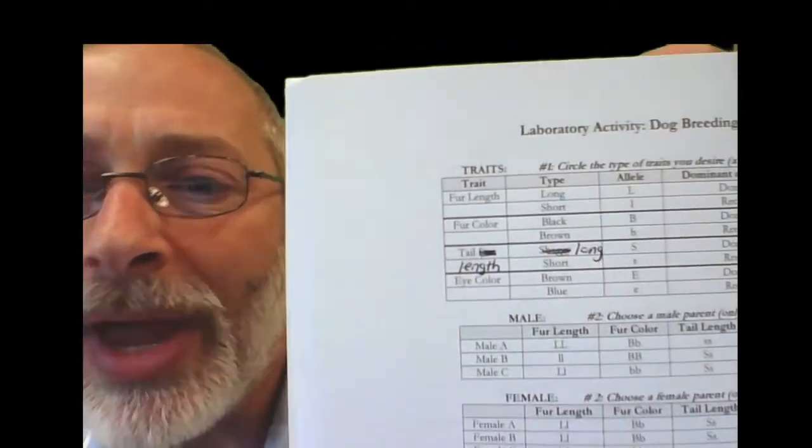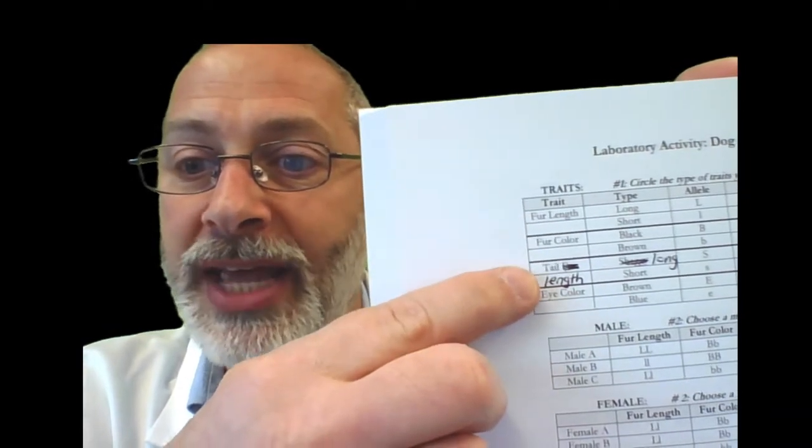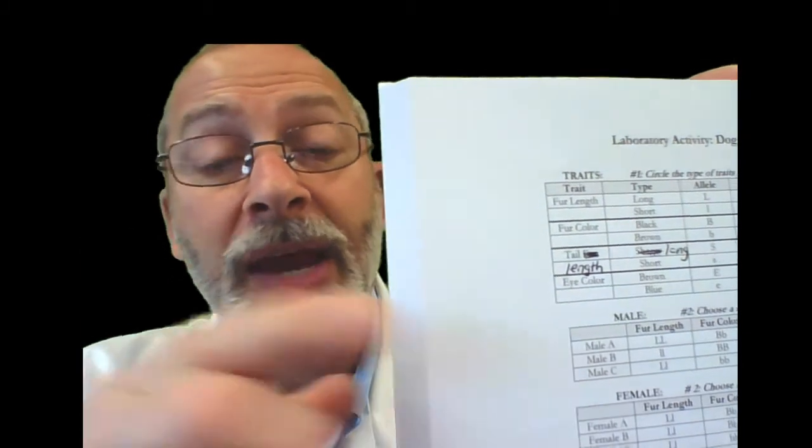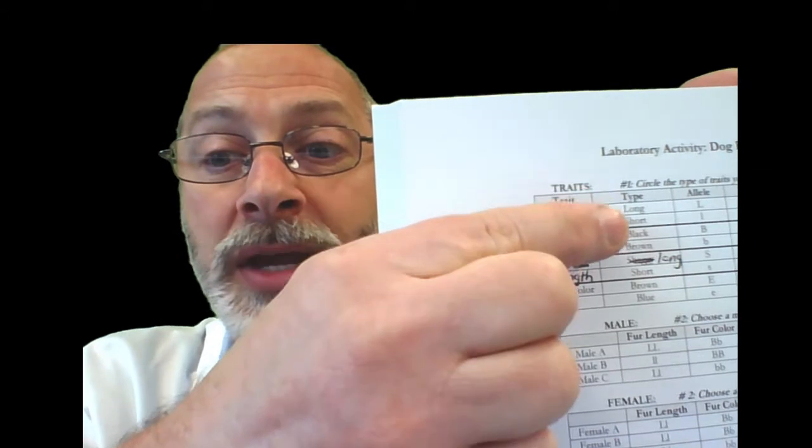Now the four traits that you should be choosing from include the fur length, the fur color, the tail length, and the eye color. Those are the four traits.